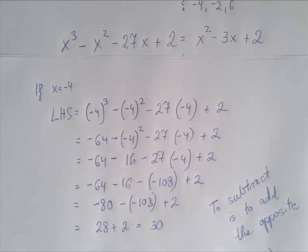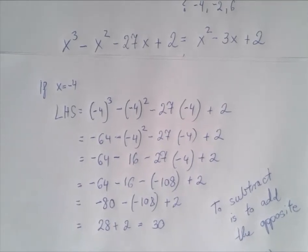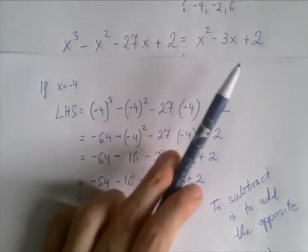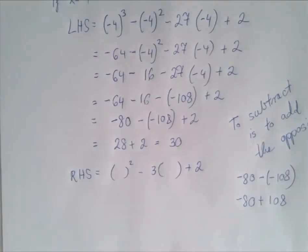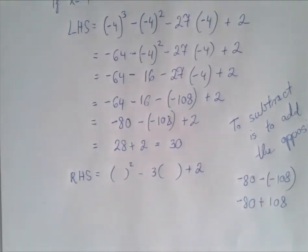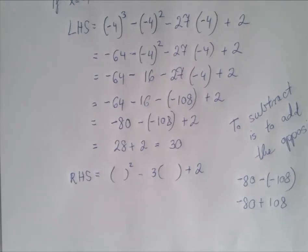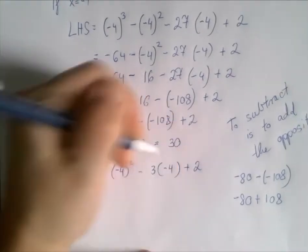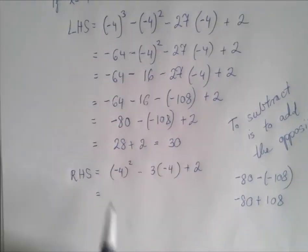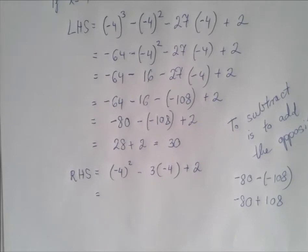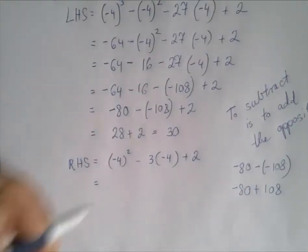Now we have to do the same thing to the right-hand side. We're going to substitute negative 4 into x squared minus 3x plus 2. We replace the variable with pairs of cute little parentheses, and then copy the value of the variable in there. And now this is just an order of operations problem. The first step is the exponentiation. Negative 4 squared is 16.